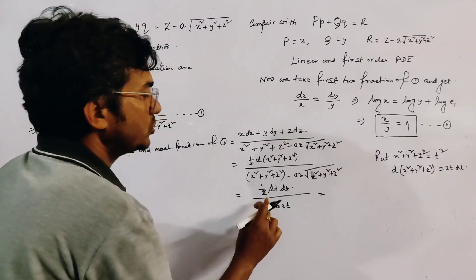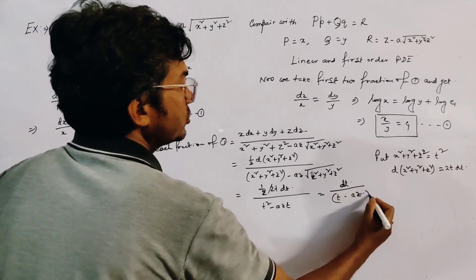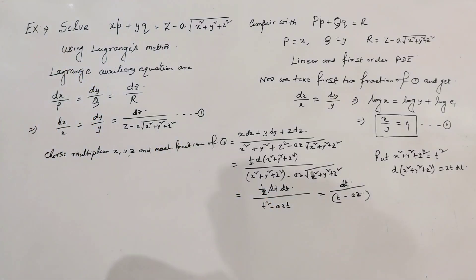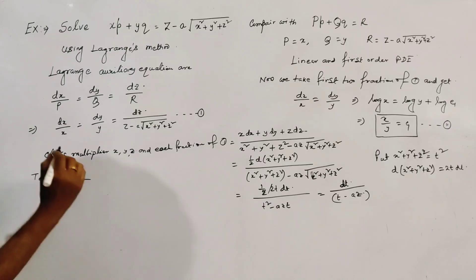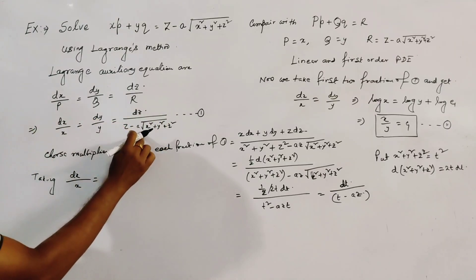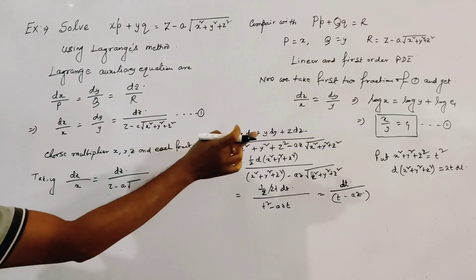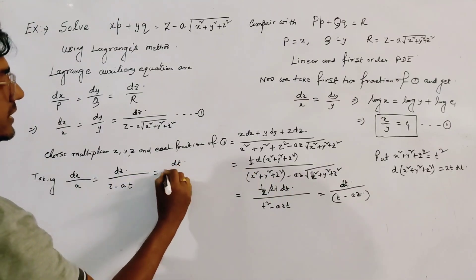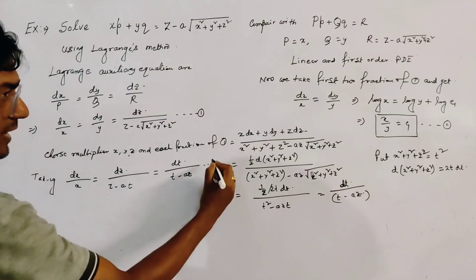The lower term becomes t² minus az·t. After cancellation, we get dt/(t minus az). We then equate dx/x with this combined fraction dt/(t minus az), and we take the first fraction of 1 equal to dz/(z minus a·t) where t = √(x²+y²+z²), alongside dt/(t minus az). We name this relation number 3.